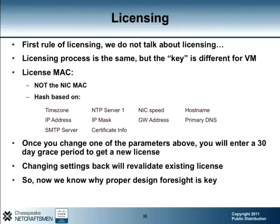Licensing is now more complex than it used to be. The licensed MAC is no longer tied to the physical address of the NIC — that is probably due to the fact that there is no physical NIC. Instead, no less than 10 host-level attributes are passed through a hashing algorithm to generate a virtual MAC address. If you change any single parameter, the hash is no longer valid, and you enter a 30-day grace period before things go sideways. In those 30 days, you can send the new license MAC information to Cisco to get new license keys. If your 30-day timer threatens to expire, you can change the parameters back to their old values to reset the timer.